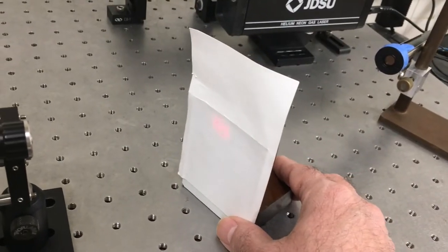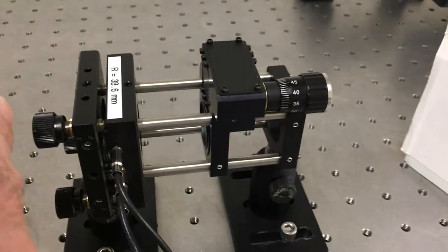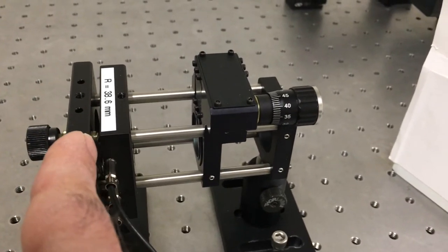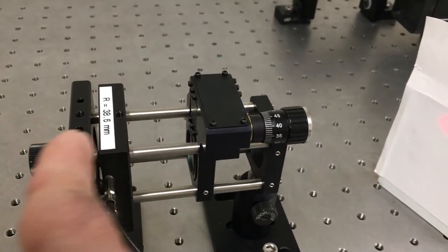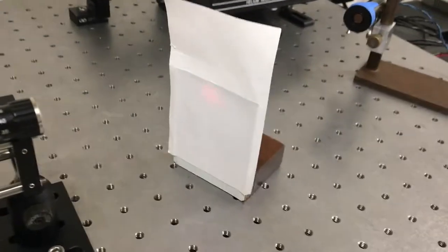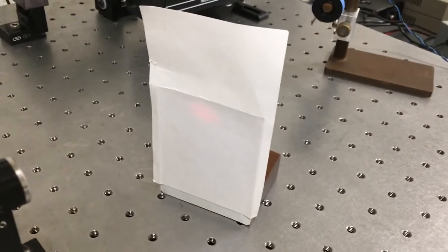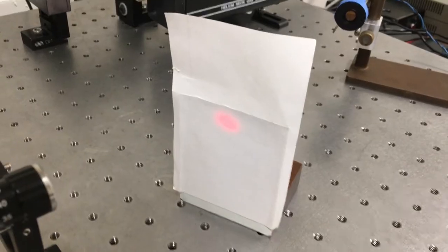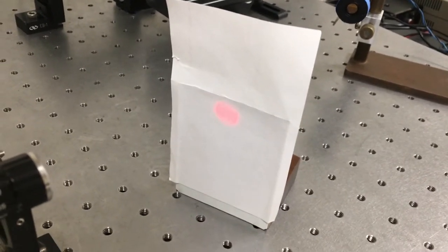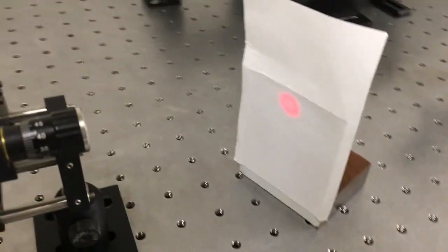To use this to analyze what's going on in the laser, we're actually taking the mirrors and this one over here can be electronically scanned back and forth very rapidly. As we're doing that, you can see the output flickers as we pass through these resonances. We can use that to figure out what's going on inside the laser.